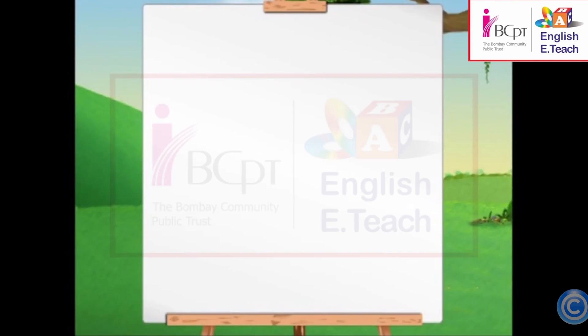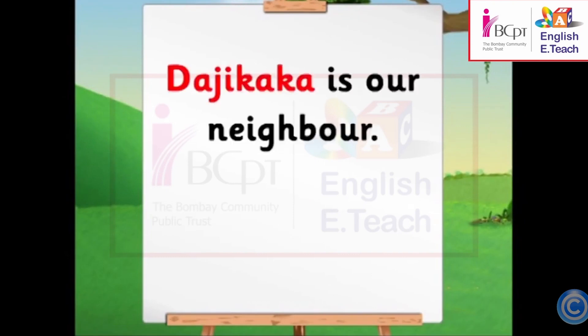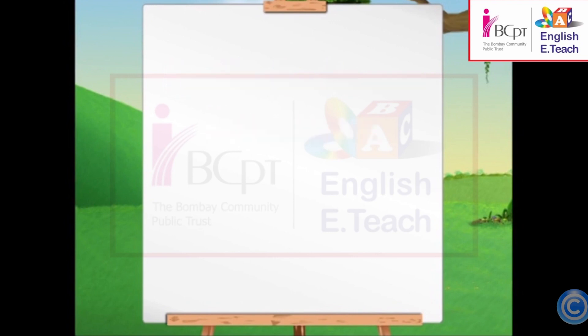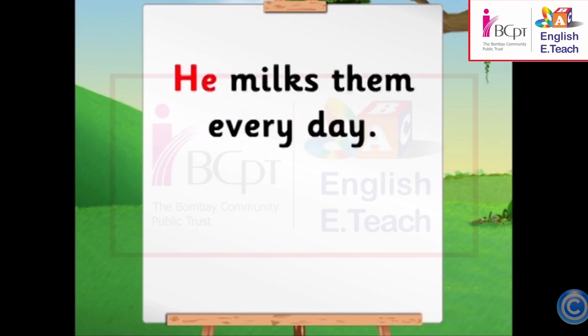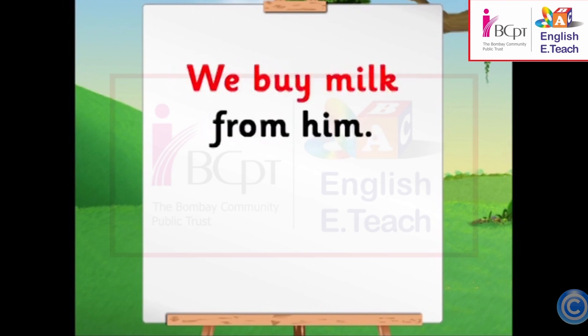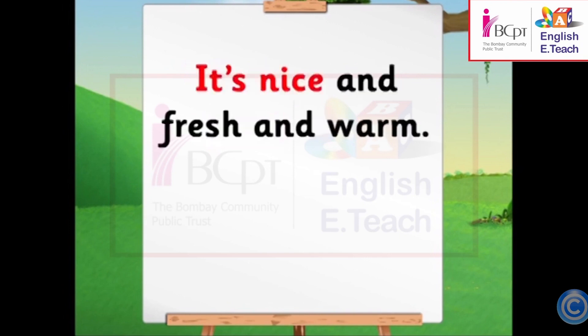Now, read the sentences with Jenny. Daji Kaka is our neighbor. He keeps cows and buffalos. He milks them every day. We buy milk from him. It's nice and fresh and warm.